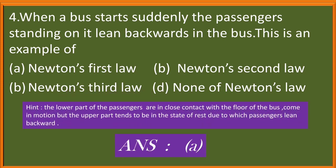Question 4. When a bus starts suddenly, the passengers standing on it lean backwards in the bus. This is an example of Newton's first law, Newton's second law, Newton's third law, none of Newton's law. So the correct answer will be option A. I have given the hint. You go through the hint given in the box.